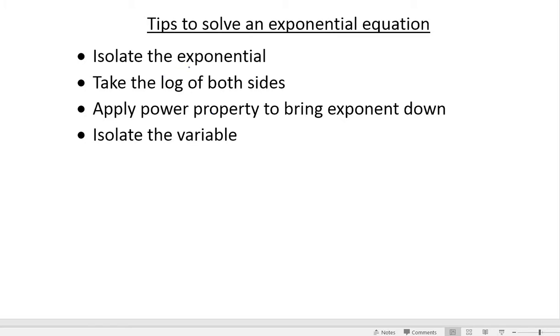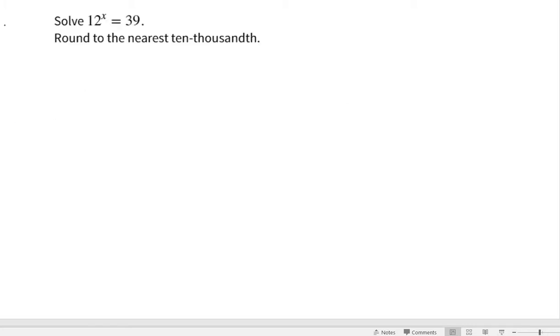But isolate the exponential. That's key. Sometimes it's already done, but if it's not, we've got to get that exponential by itself. Then we can use the log. Remember, logs are the inverses of exponentials. That allows us then to use the power property, bring that exponent down, basically unlock that exponent. And then our goal, like any algebra equation we're solving, isolate the variable. So let's go look at a few examples together.